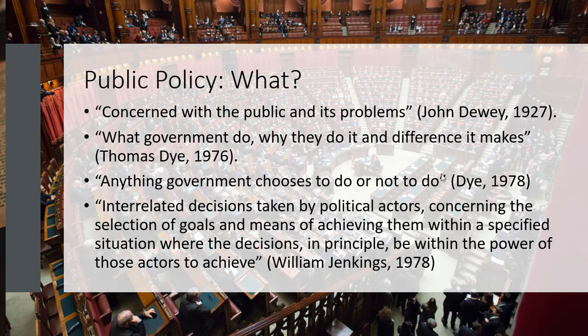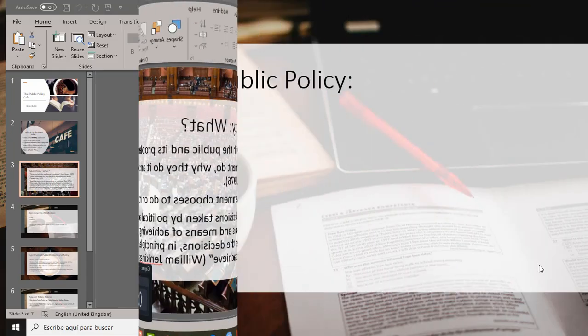Jenkins' definition also looks at the concept of power to achieve the decisions made, putting public policy in the context of government's power to achieve its goals — in terms of the financial resources available, the information available to government, the time available, and the power granted by the constitution to governments or political actors.